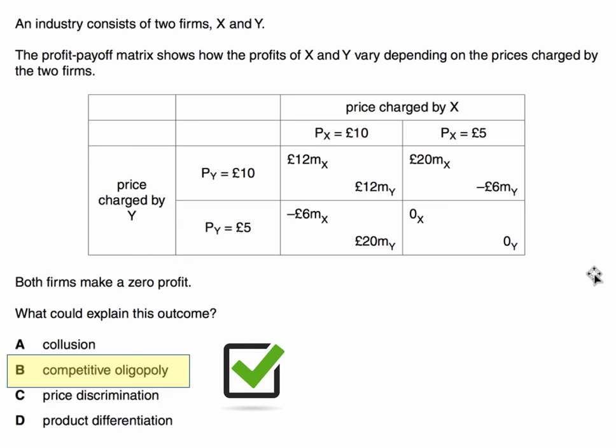So they're down in the bottom right of the payoff matrix table, which suggests that they've probably got locked into maybe a low price war, which means, of course, that they both make a zero profit. Equally, that means they avoid a loss. For example, if firm Y charged a low price and X charged a high price, then X would make a loss and Y would make a profit. So the zero-zero option in the bottom right-hand corner is indicative of firms being in a competitive oligopoly rather than a price-fixing oligopoly.